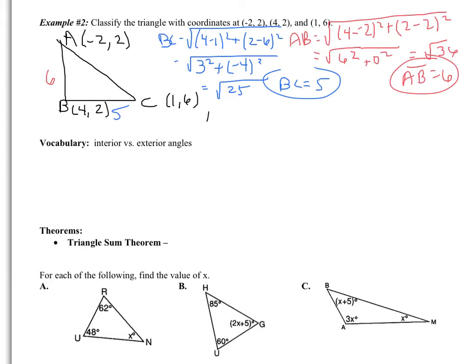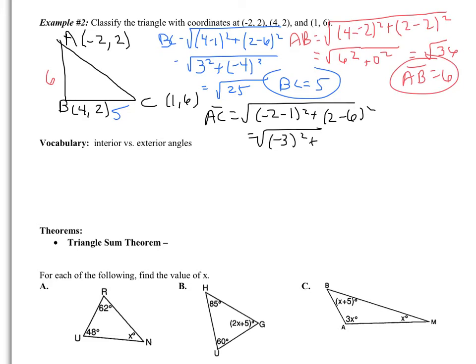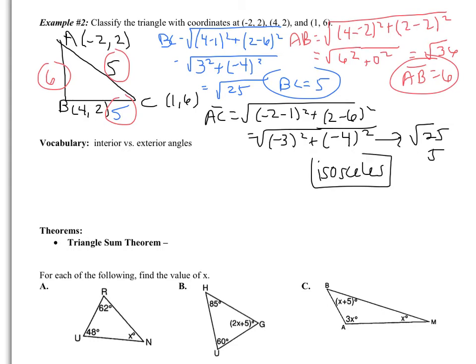For the last side AC: (−2 − 1)² + (2 − 6)² = (−3)² + (−4)² = 9 + 16 = root 25, so AC equals 5. So I have sides of 5, 5, and 6. Classifying by sides, this is an isosceles triangle because two sides are congruent. It's also going to be an acute triangle, which we will discuss when you come to class.